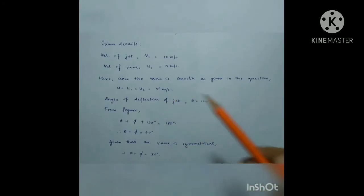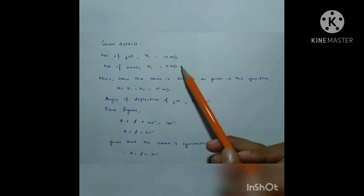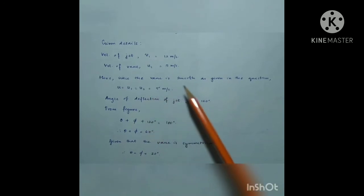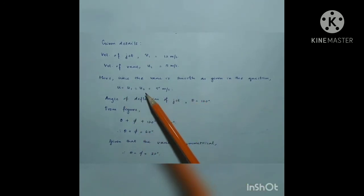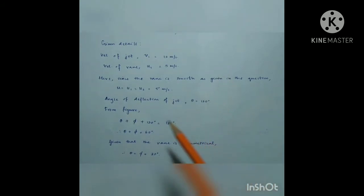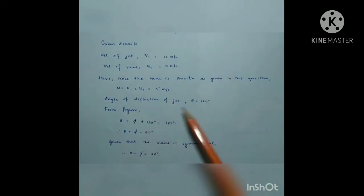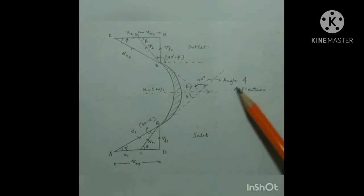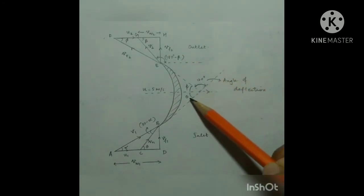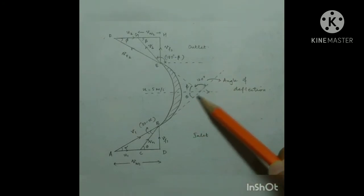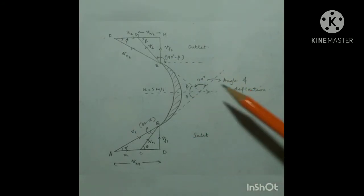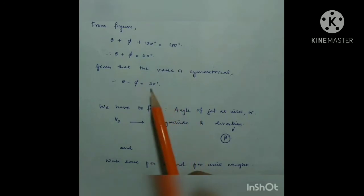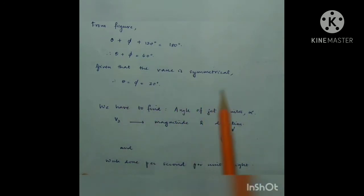Now let us note down the given details. Velocity of jet V1 = 12 m/s. Velocity of vane U1 = 5 m/s. Since the vane is smooth, U = U1 = U2 = 5 m/s. The angle of deflection of jet is given as 120 degrees. From the figure, theta + phi + 120° = 180°, so theta + phi = 60°. Since the vane is symmetrical, theta = phi = 30°.